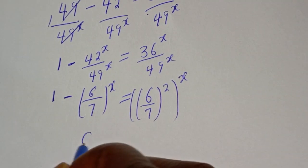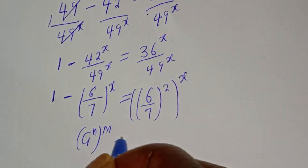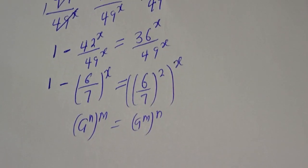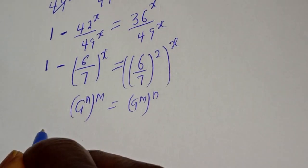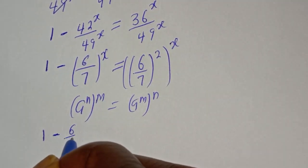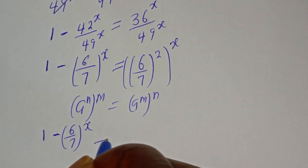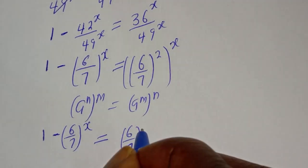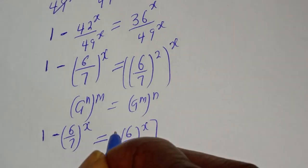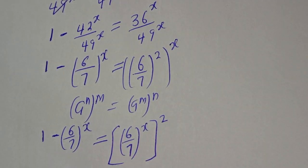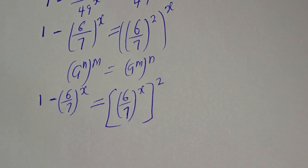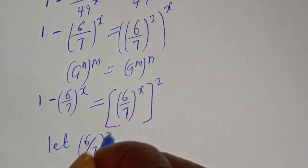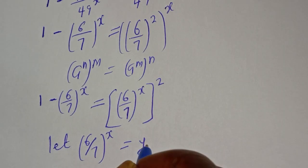Now take note that if you have a raised to power n, to the power of m, it is equal to a raised to power m, to the power of n. So 1 minus (6 over 7) to the power of s is equal to (6 over 7) to the power of s, all squared. Let (6 over 7) to the power of s equal y.